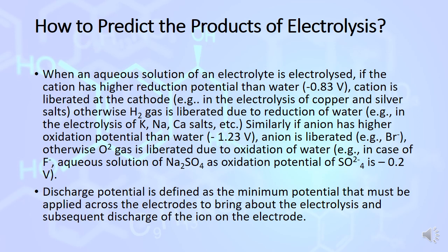Similarly, if anion has a higher oxidation potential than water, the anion is liberated. Otherwise, oxygen gas is produced at the anode.